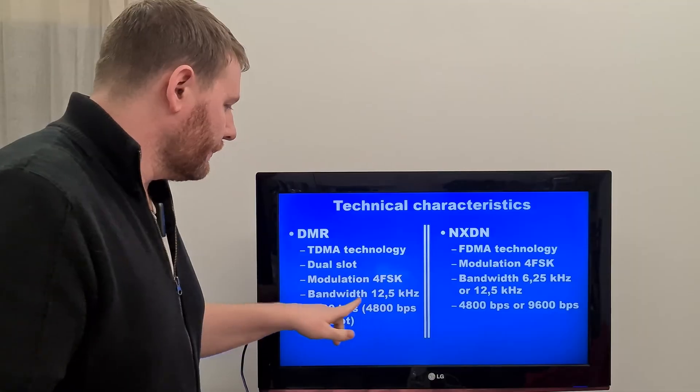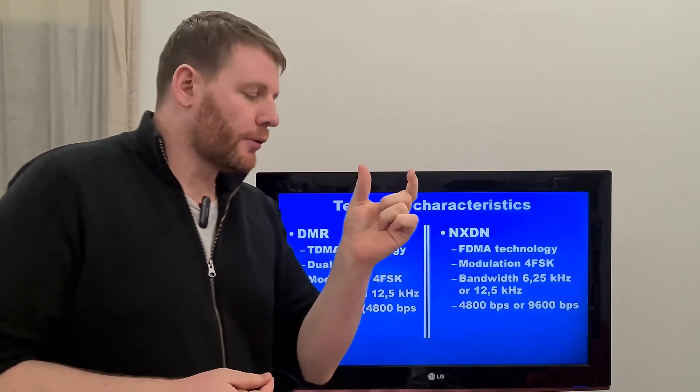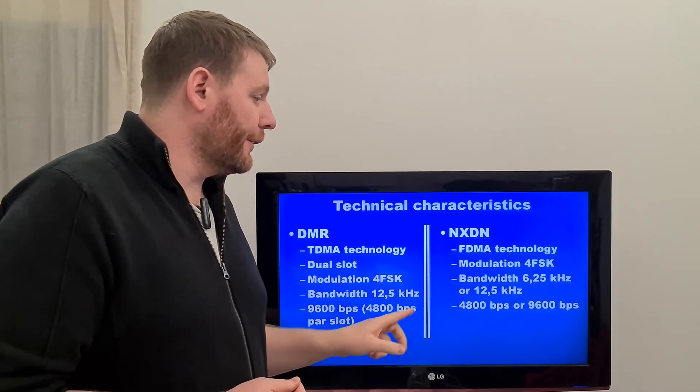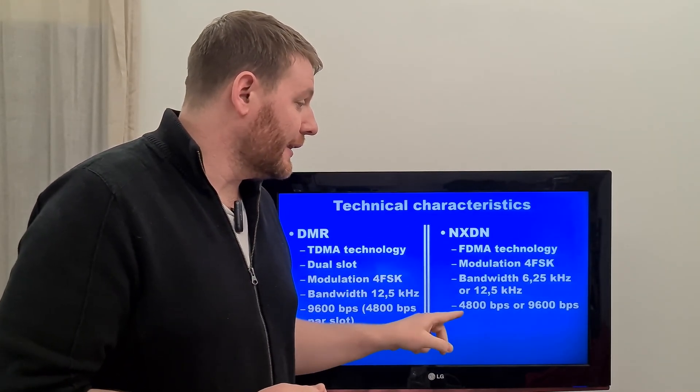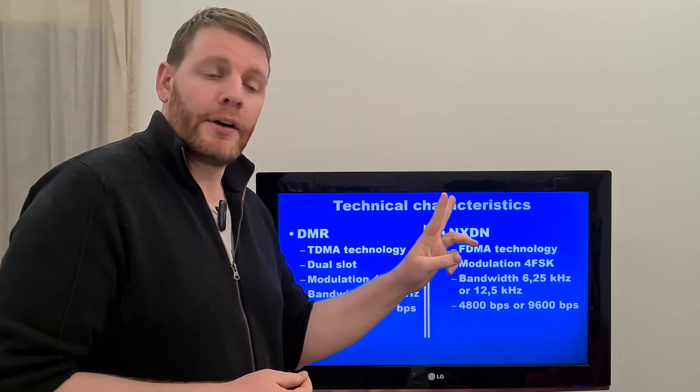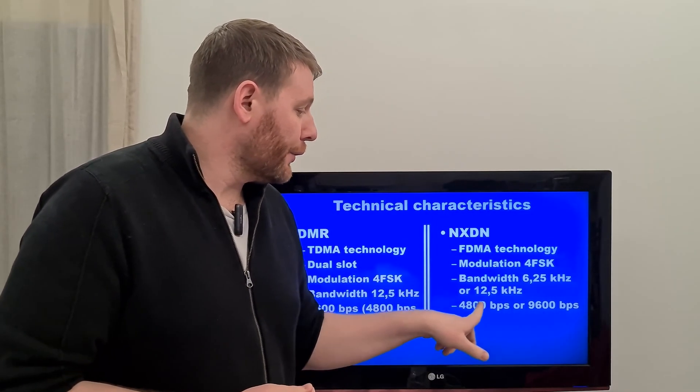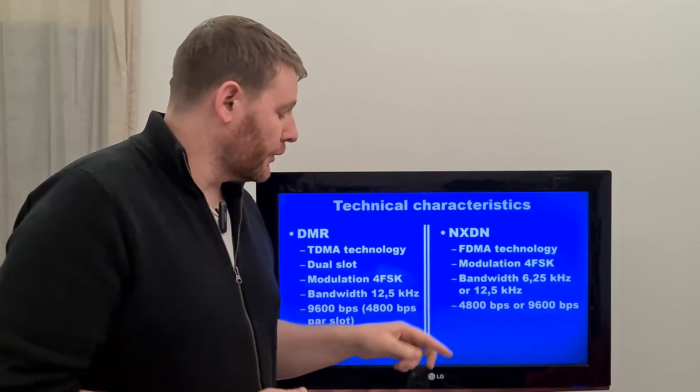The bandwidth, the occupied spectrum, is in DMR 12.5 kHz and in NXDN, it depends of the standard used, it's 6.25 kHz or 12.5 kHz.